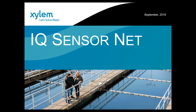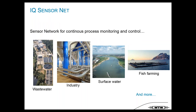Let's start with a brief overview of IcoSensorNet. IcoSensorNet is a sensor network for continuous process monitoring and control. We have a wide range of applications — we can use it in wastewater, industry applications, surface water, fish farming, and more.